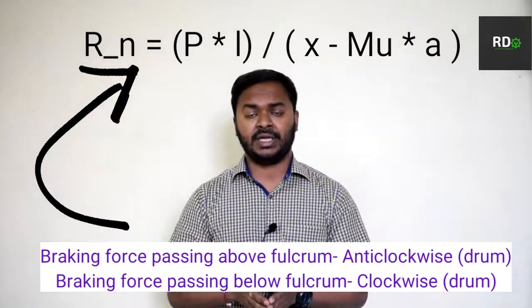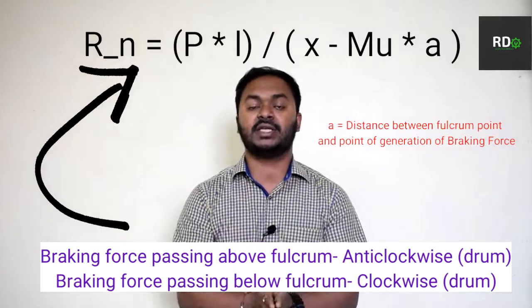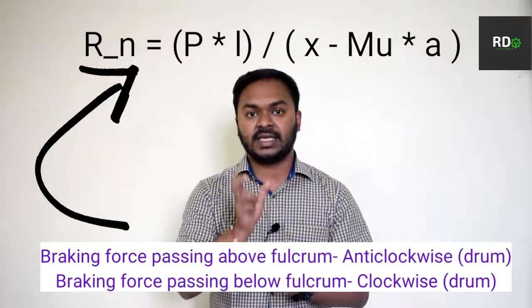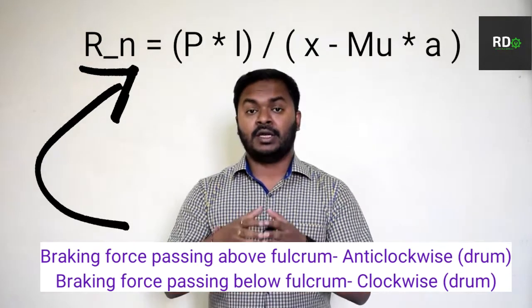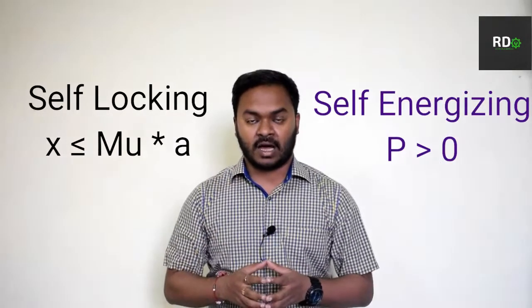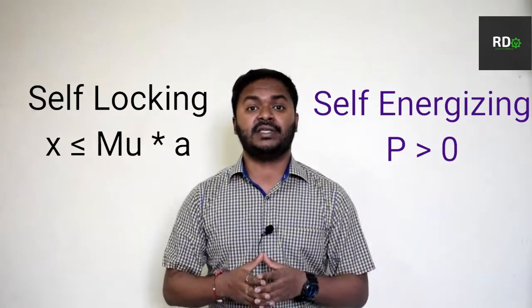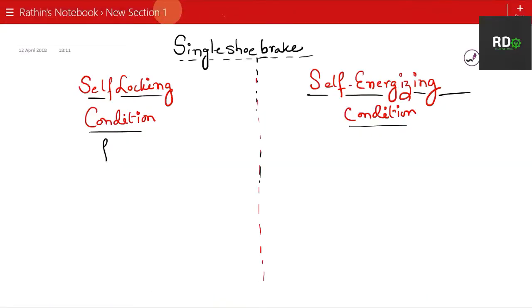Using this expression R_n = P·L / (x − μa), we can derive the two conditions: the self-locking condition and the self-energizing condition. For self-locking, x should be less than or equal to μ·a. For self-energizing, the external force P should be greater than zero.